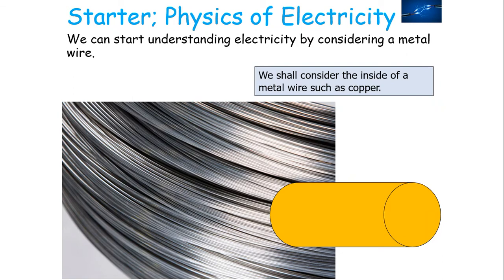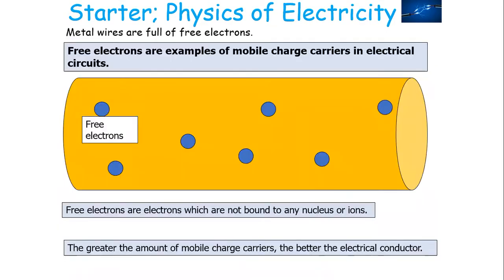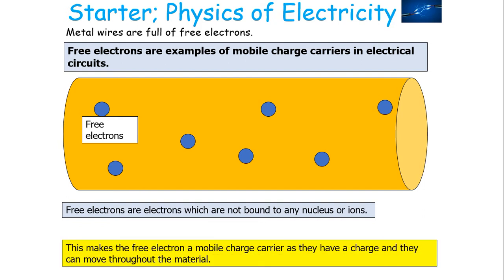We can start to understand electricity by considering a metal wire, such as copper. Metal wires are full of free electrons. Free electrons are examples of mobile charge carriers in electrical circuits. A free electron is an electron which is not bound by any nucleus or ion, so it's freely moving within the metal.